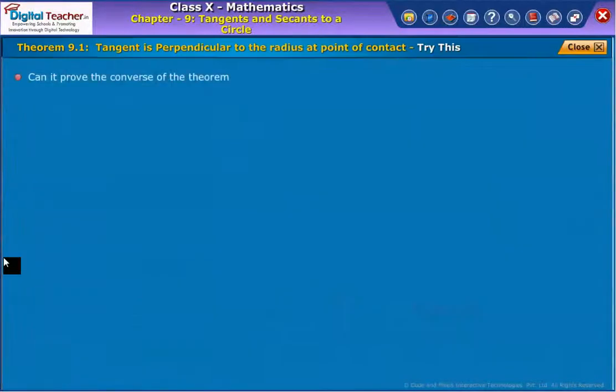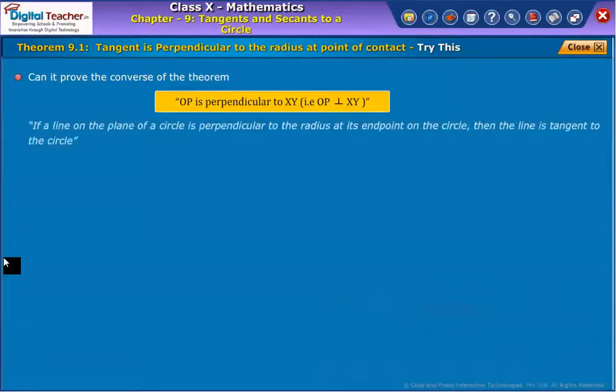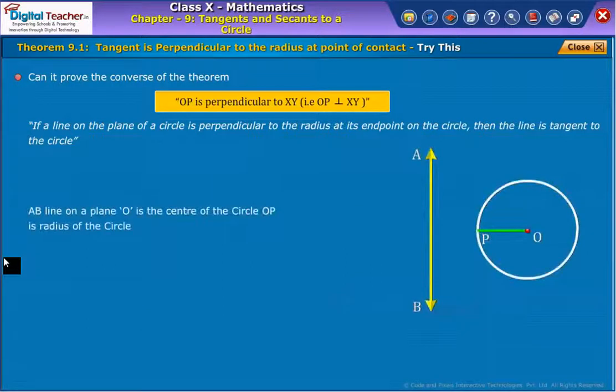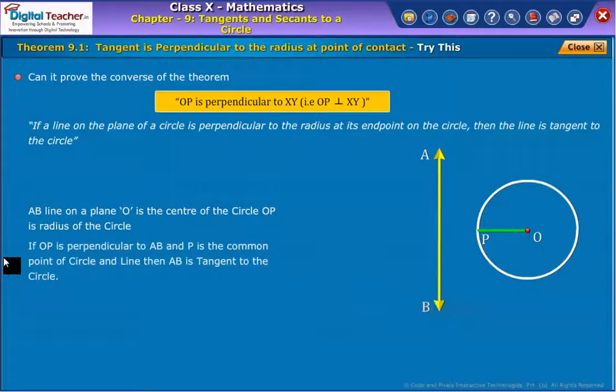Can we prove the converse of the theorem? If a line on the plane of a circle is perpendicular to the radius at its endpoint on the circle, then the line is tangent to the circle. To prove: take a line AB on a plane, OP is radius of the circle. If OP is perpendicular to AB and P is the common point of circle and line, then AB is tangent to the circle.